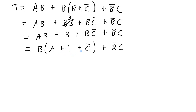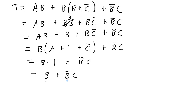Inside the brackets, I'm ORing with a 1, so that whole expression becomes 1. So we have b ANDed with 1, ORed with NOT b AND c. Anything ANDed with 1 is simply itself. Now I'm down to b ORed with NOT b AND c. I should recognize that this is identical in form to the previous two examples — a variable ORed with its inverse ANDed with another variable — which of course is just going to equal b ORed with c.